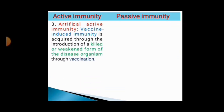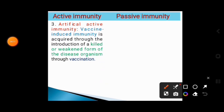Artificial active immunity results through vaccination. Vaccine-induced immunity is acquired through introduction of a killed or weakened form of a disease organism, and this results in artificial active immunity.